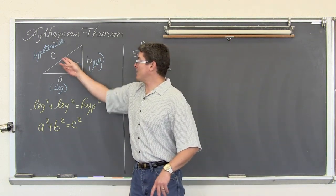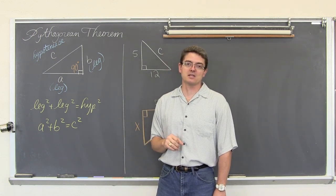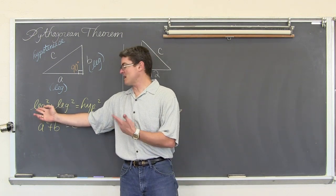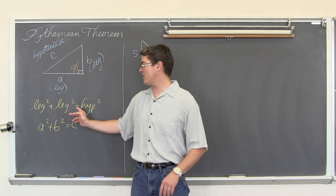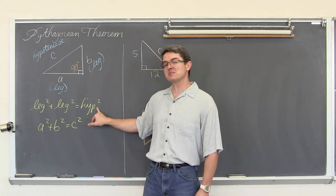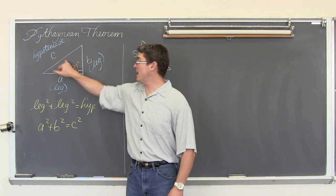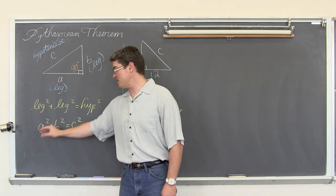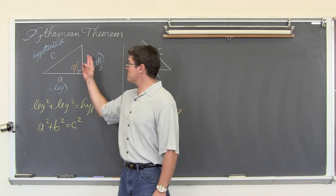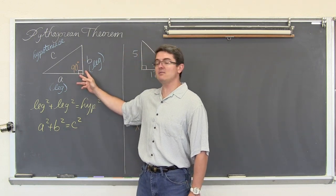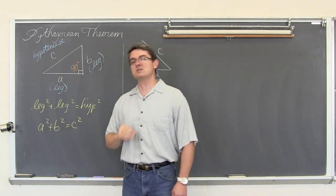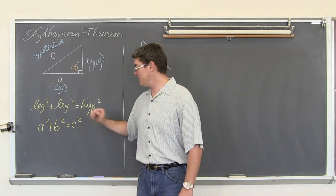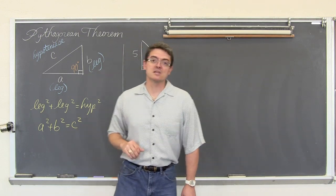If your hypotenuse — the side opposite the right angle — is not the longest measurement, then you have made a mistake somewhere. The formula for the Pythagorean Theorem is: leg squared plus leg squared equals hypotenuse squared. Just make sure that the longest side of your triangle, the hypotenuse, the side opposite 90 degrees, is the side that is by itself. What you will see most of the time in textbooks is a squared plus b squared equals c squared. The two sides that help to make the right angle are always together in the equation, and the hypotenuse — the longest side — is always the value that is by itself on the right-hand side.